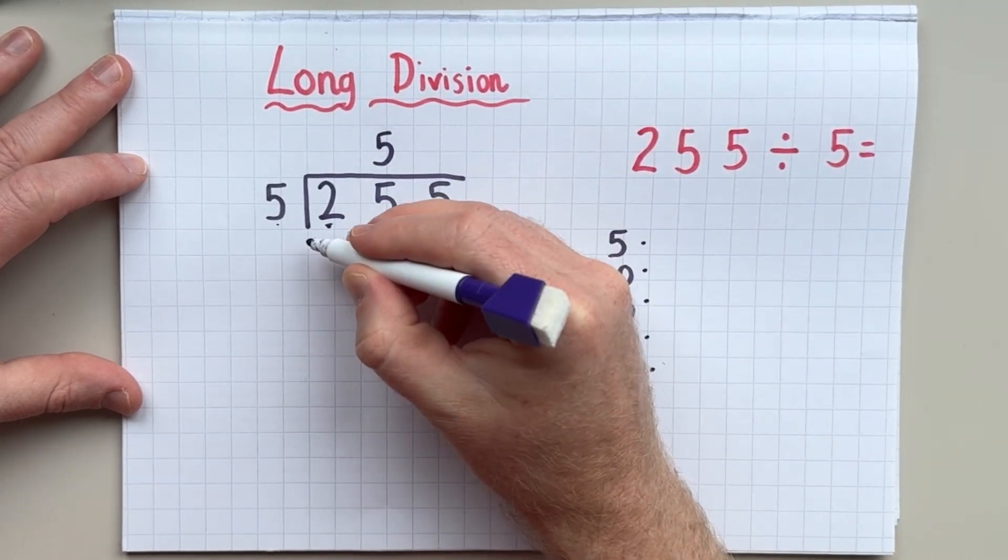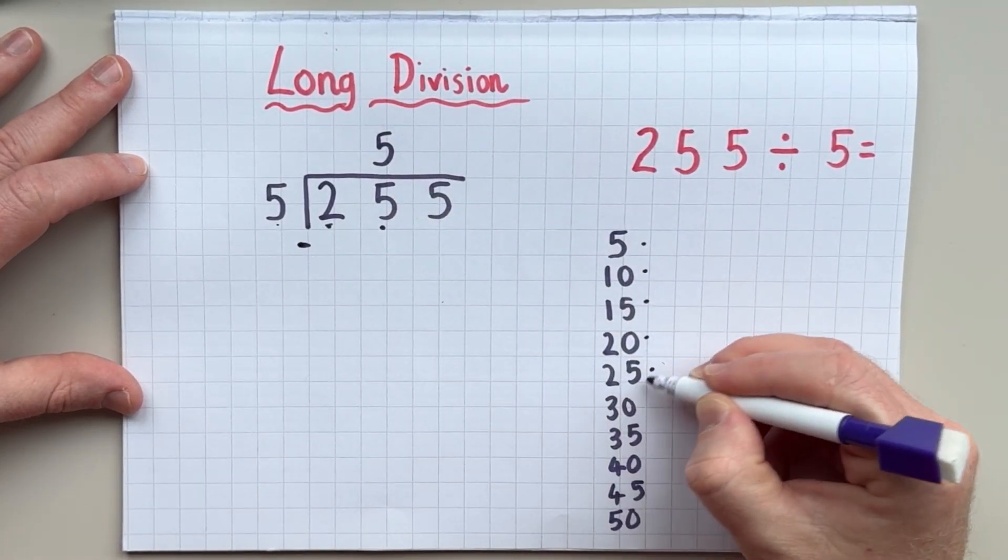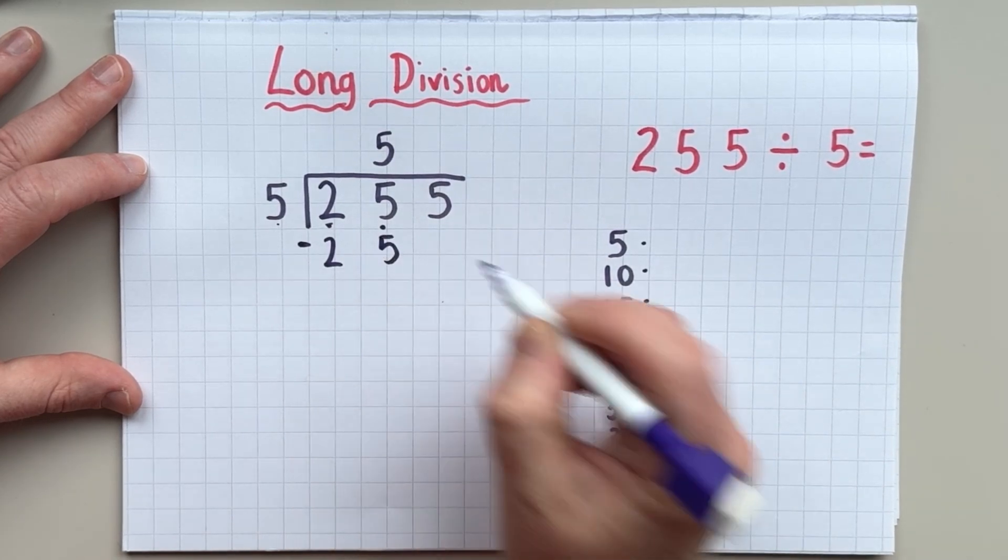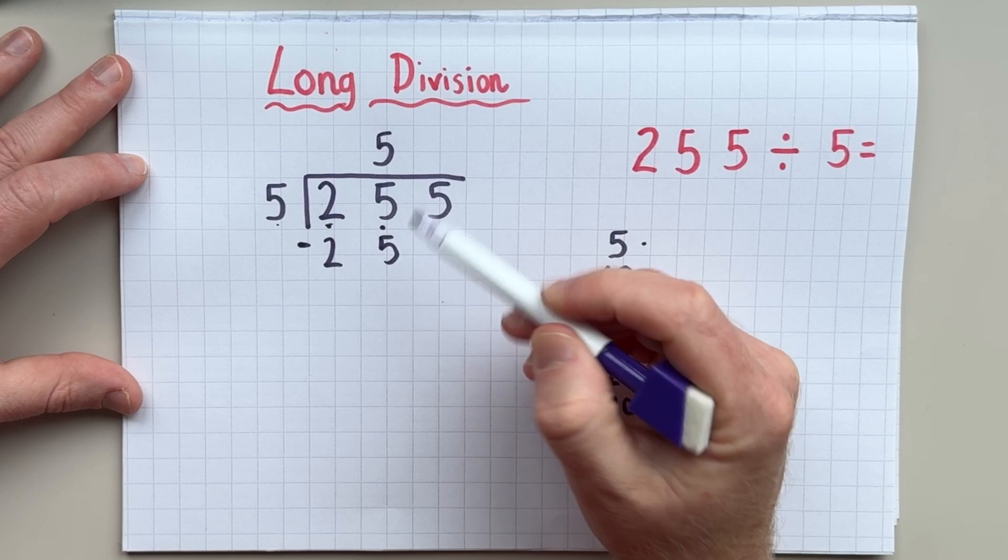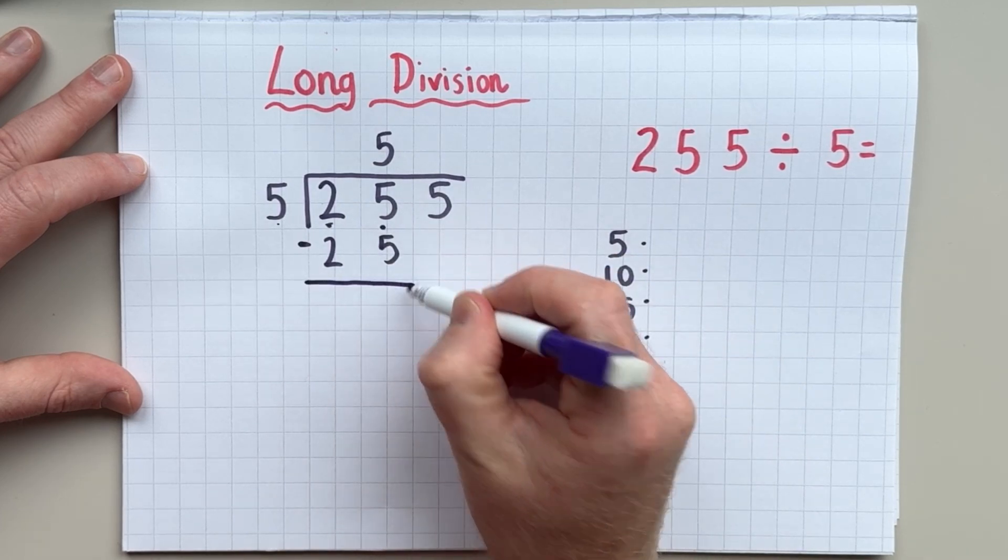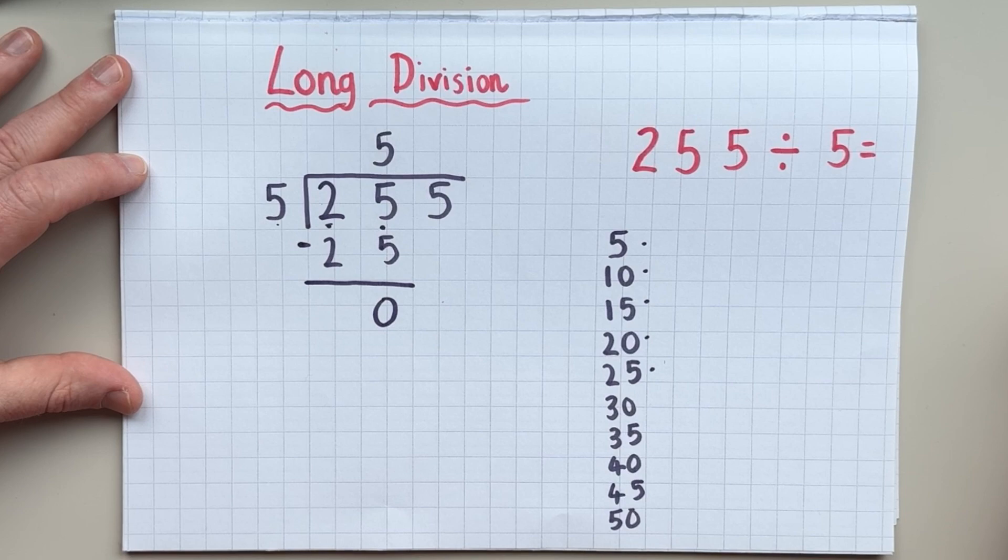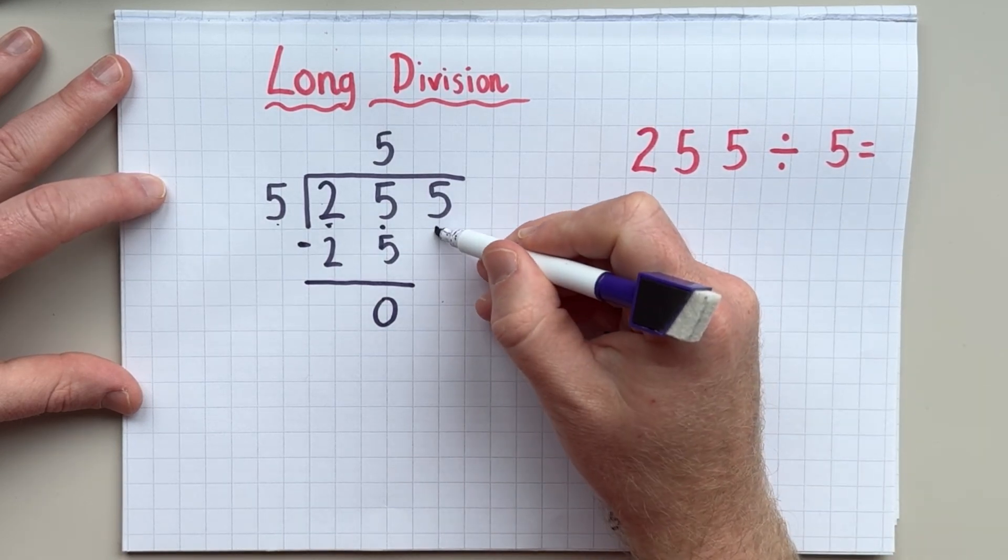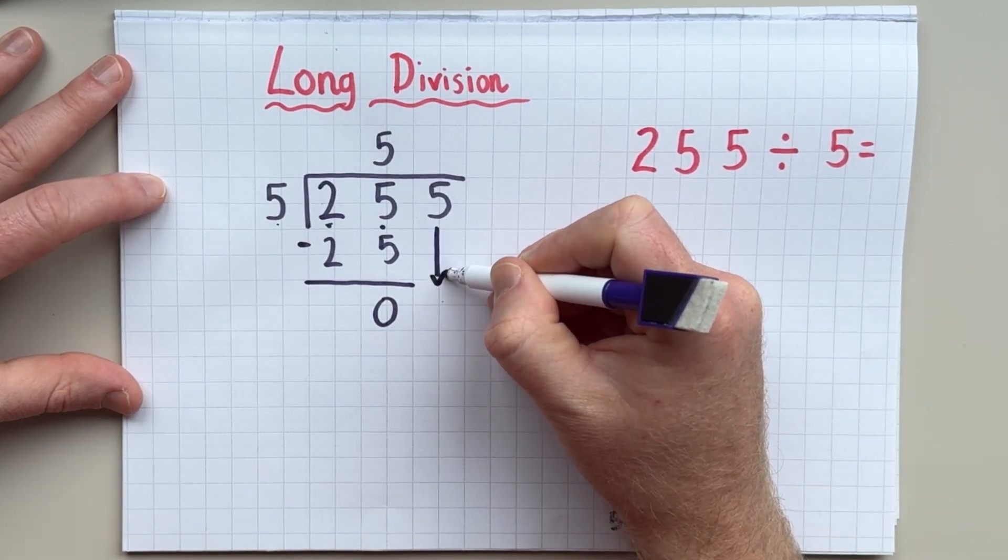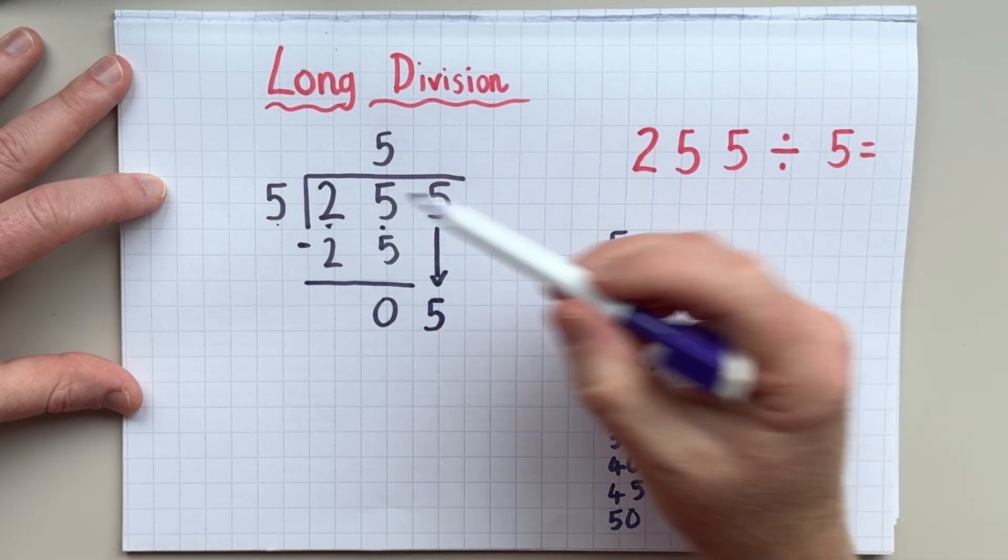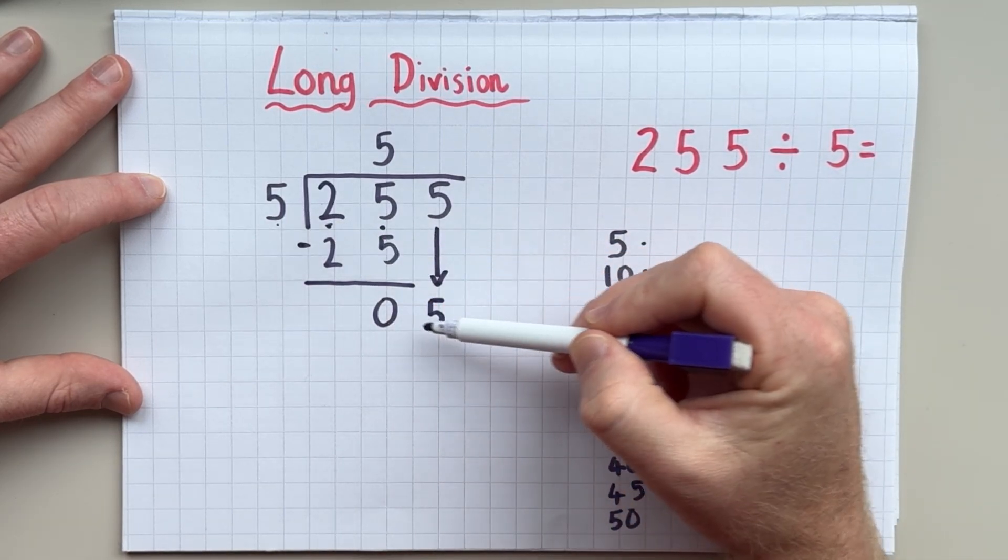And this is what makes it long division. So I'm going to take away this number underneath. So I had 25 and I'm going to take away 25. That leaves me with the remainder of zero. And in long division, I'm going to bring this five down now to here.